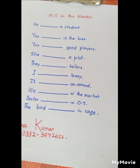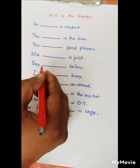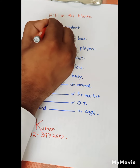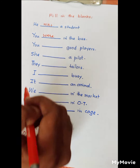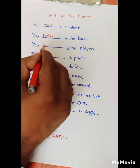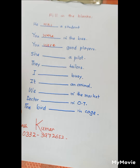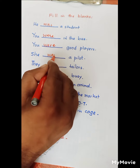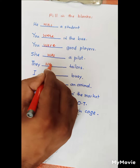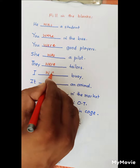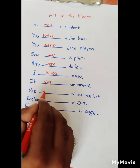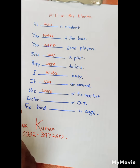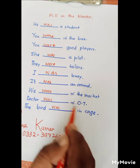Now let's look at these examples: 'He was a student', 'You were in the bus', 'You were good players', 'She was a pilot', 'They were tailors', 'I was busy', 'It was an animal', 'We were in the market', 'The doctor was in OT', 'The bird was in the cage.'